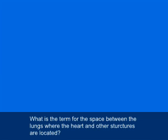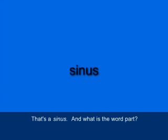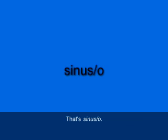What is the term for the space between the lungs where the heart and other structures are located? That's the mediastinum — M-E-D-I-A-S-T-I-N-U-M. And finally, what is the term for a cavity within a bone lined with mucous membrane? That's a sinus — S-I-N-U-S. And the word part is sinuso — S-I-N-U-S slash O. Pretty straightforward.